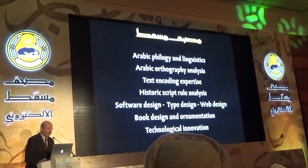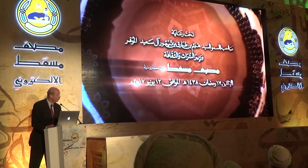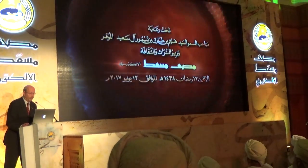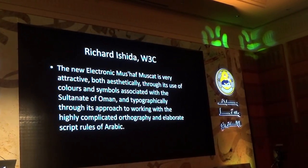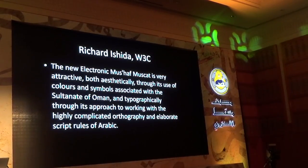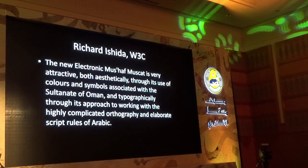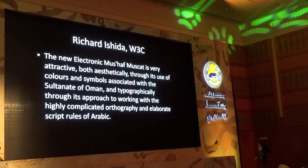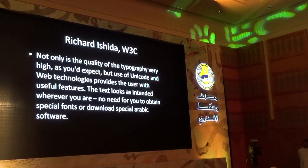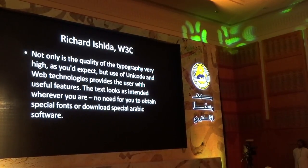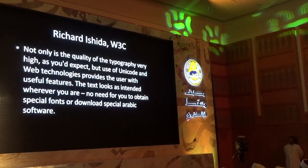Now I'm adding the opinions of the two representatives who were willing to make a statement but not able to do this in person. This is Richard Ishida. He represents the World Wide Web Consortium, and I read in his name: 'The new electronic Moskhat Muscat is very attractive, both aesthetically, through its use of colors and symbols associated with the Sultanate of Oman, and typographically, through its approach to working with the highly complicated orthography and elaborate script rules of Arabic. Not only is the quality of the typography very high, but the use of Unicode and web technologies provides the user with useful features. The text looks as intended wherever you are.'